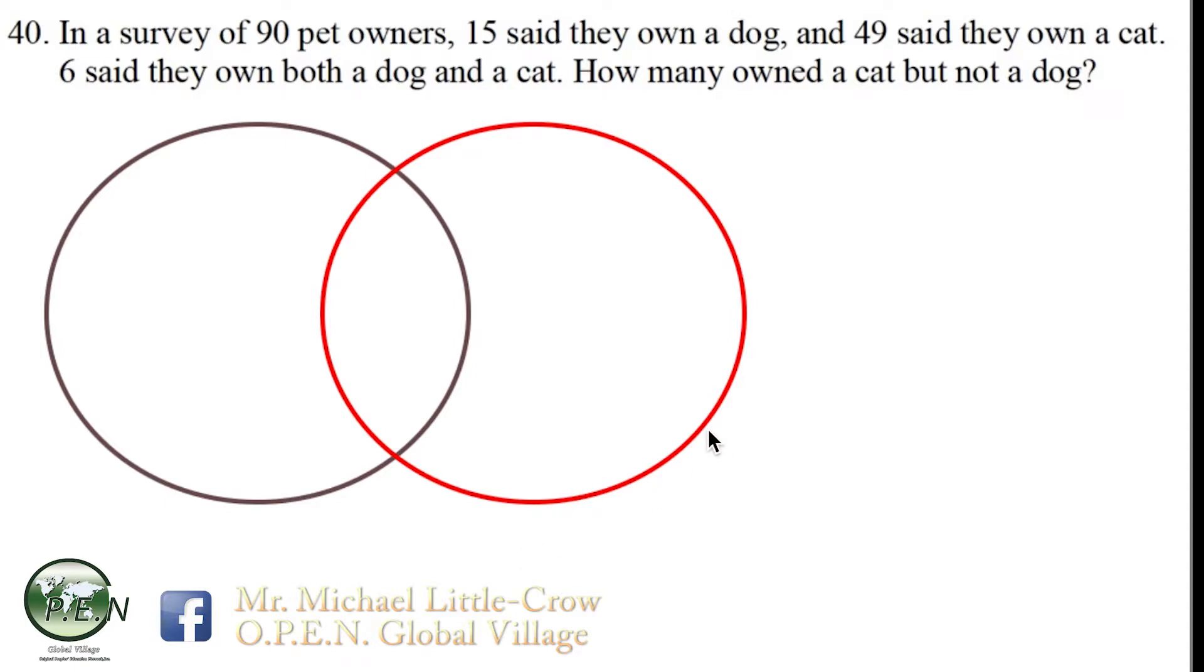For this particular question, we're going to use the tool of a two-circle Venn diagram to segregate the data a little bit more than was originally given to us.